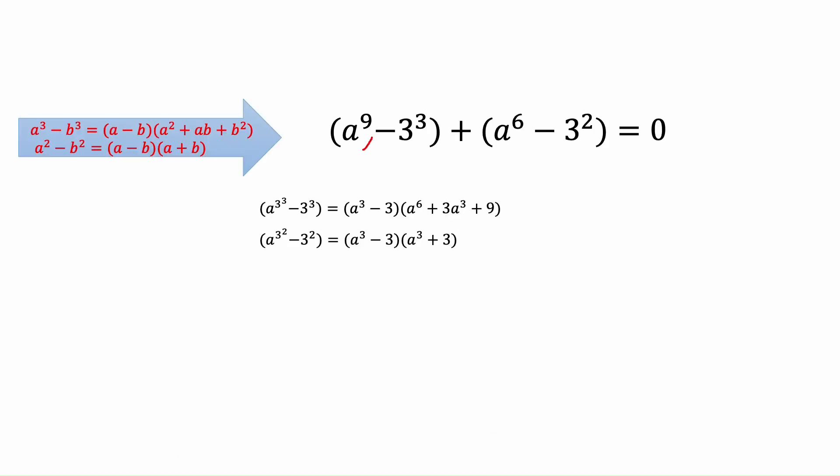As we see, a to the power 9 is a to the power 3 to the power 3. 3 times 3 equals 9. And a to the power 6 is a to the power 3 to the power 2. 3 times 2 equals 6. So now we make each of these parentheses same as these formulas.